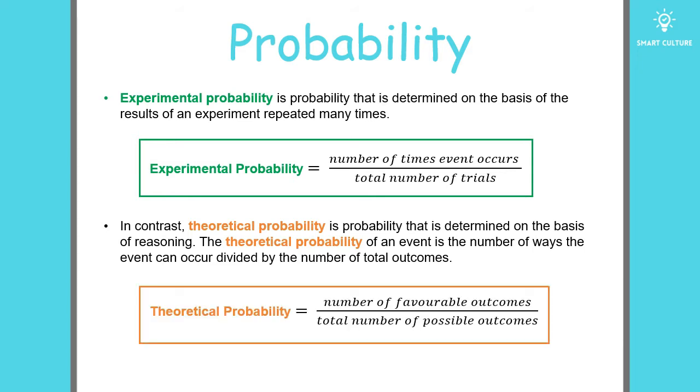So let's just look at this formula one more time. It's the number of favorable outcomes divided by the total number of possible outcomes.